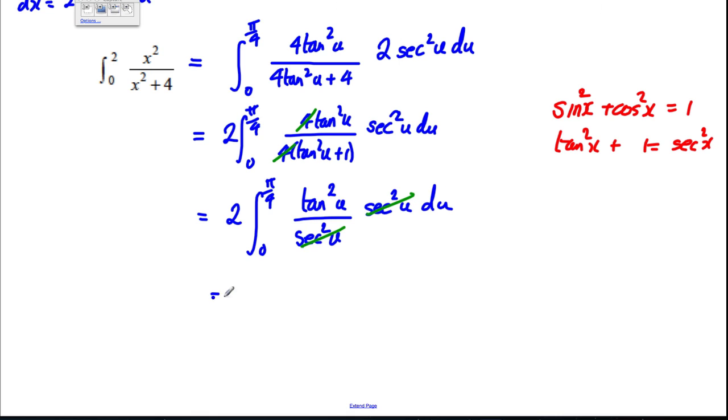And so, what we've got, we've got two, the integral between zero and π by four of tan²(u)du.